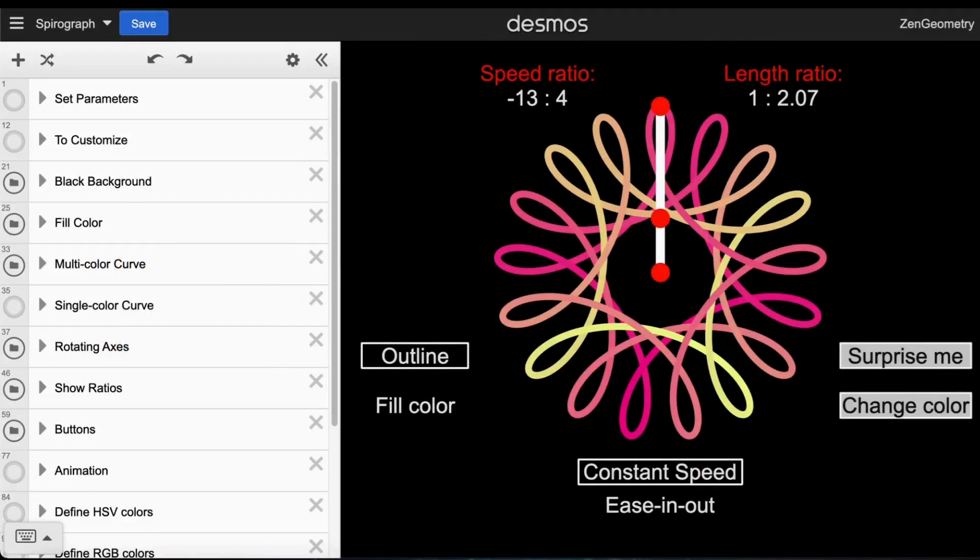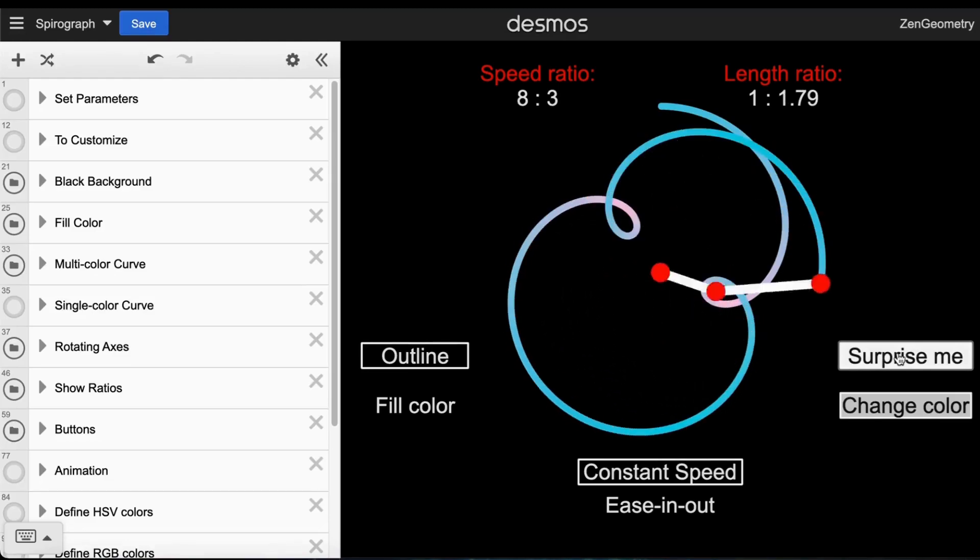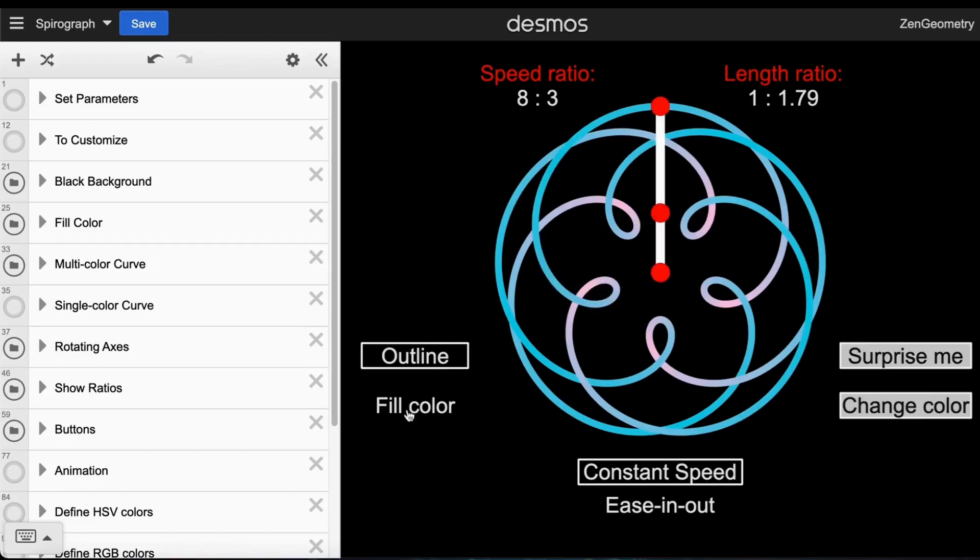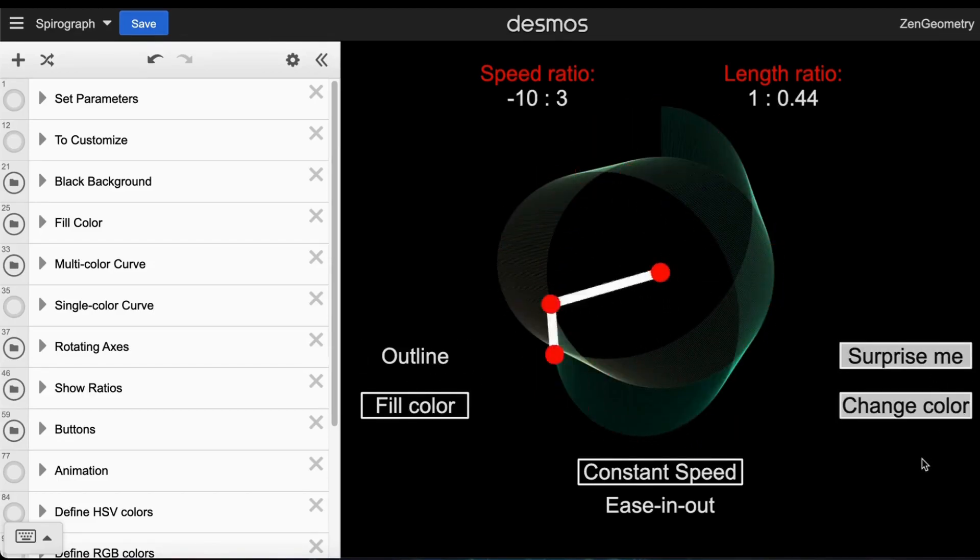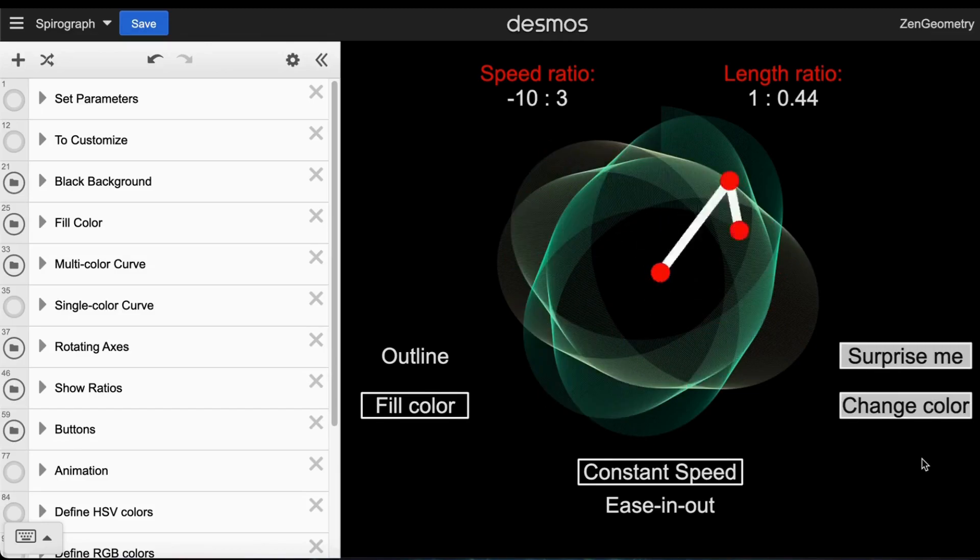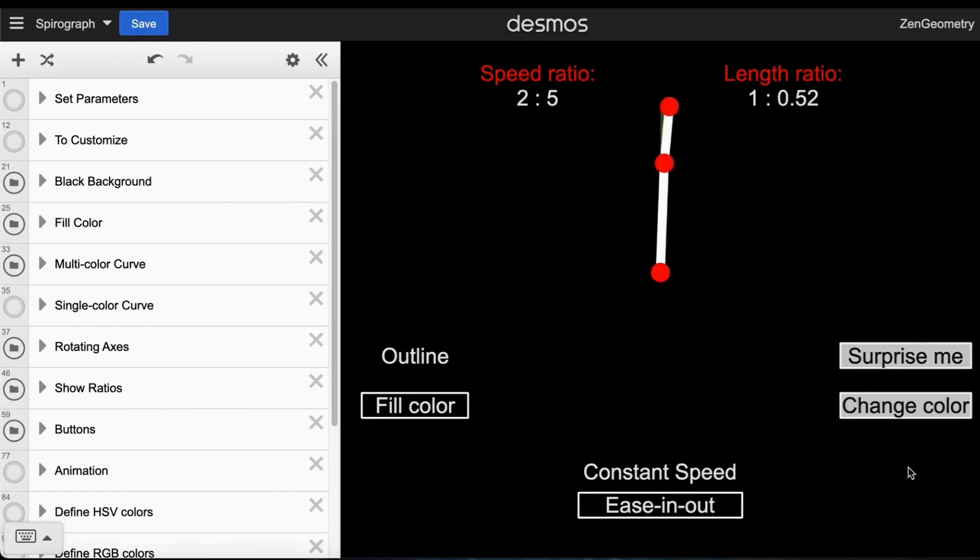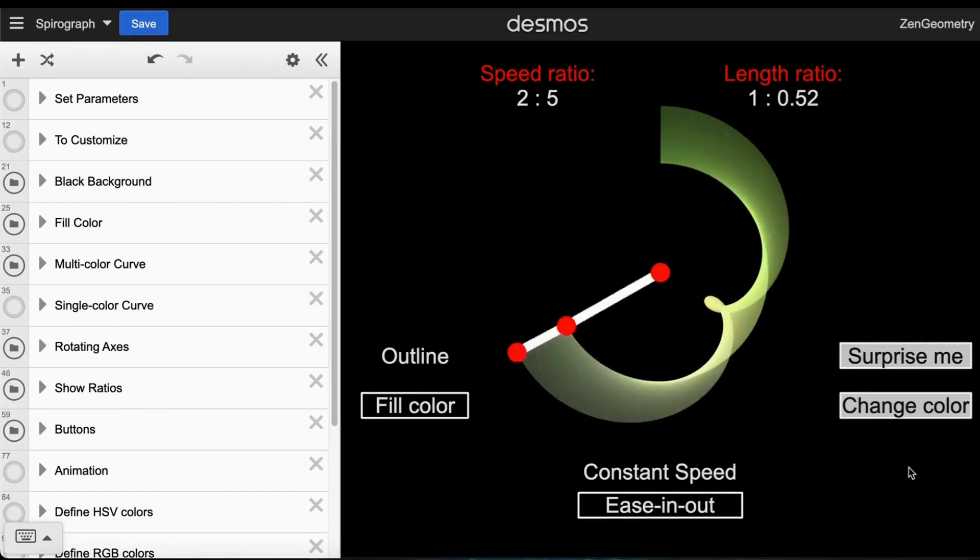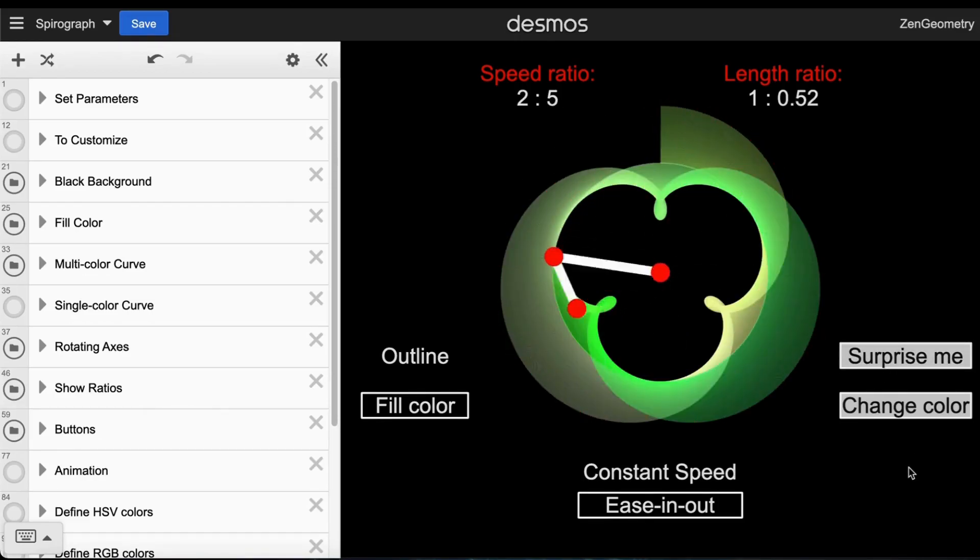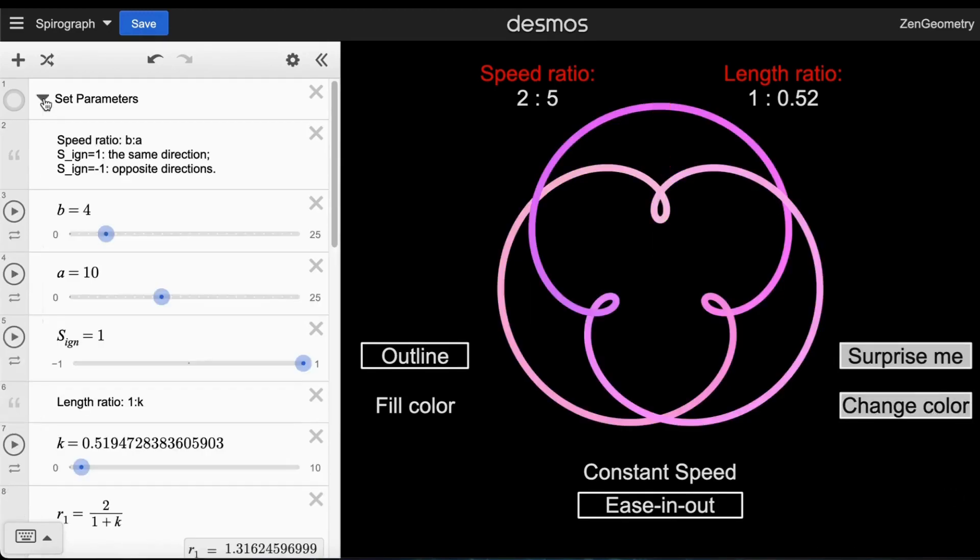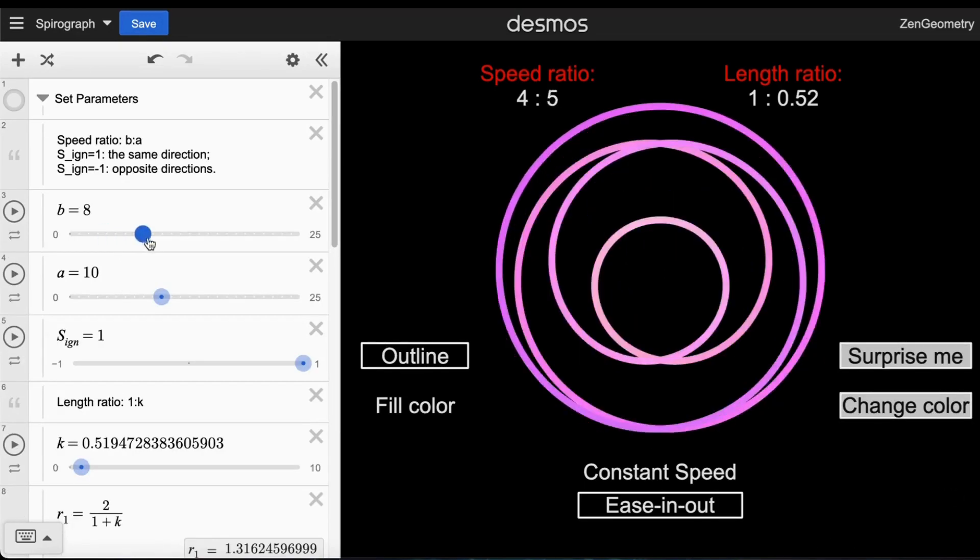Now, let's take a look at the Desmos link I've prepared. You can generate a random pattern with just one click, or play around with the parameters to see how the numbers impact the pattern.